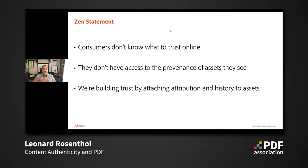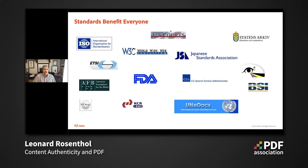The goal we're trying to achieve as this organization — called the Consortium for Content Provenance and Attribution — is to attach that attribution and history to assets. It should come as no surprise that you have to do this as a standard, in the open, as a group. This is why we here in the PDF Association have partnered with ISO, and why the Consortium partners with many other organizations, to make sure this is done in an open standards manner.